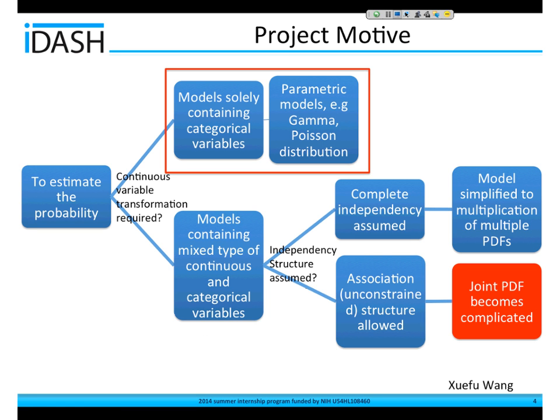So far, people have been transforming continuous variables. They either group the continuous variables into levels — like high level, medium level, or low level. And further, they place strong assumptions on the distribution, like assuming the distribution should follow a gamma distribution or a Poisson distribution.